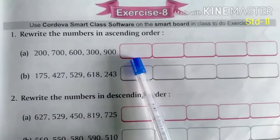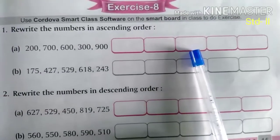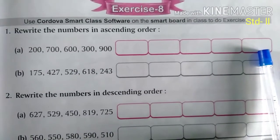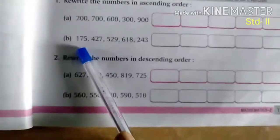200, then comes 300, then comes 600, then comes 700 and then comes 900.